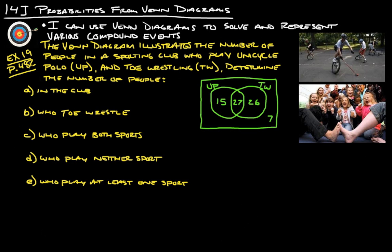First thing is example 19 from page 482. The Venn diagram illustrates the number of people in a sporting club who play unicycle polo, represented by UP, and toe wrestling, TW. Determine the number of people in the club who toe wrestle, play both sports, play neither sport, play at least one sport. We're going to use this Venn diagram here to answer all these questions.